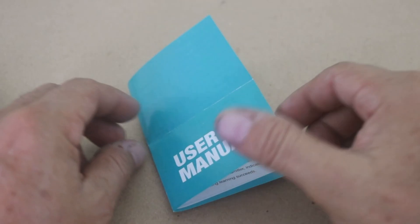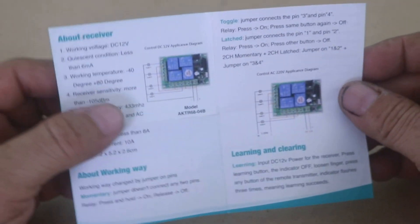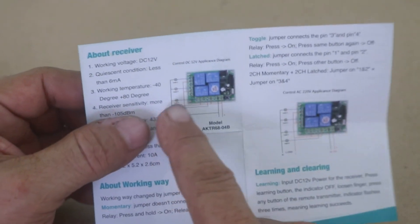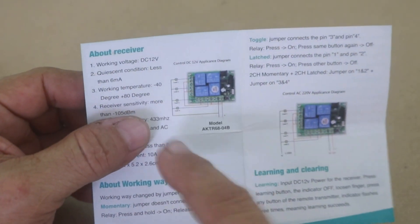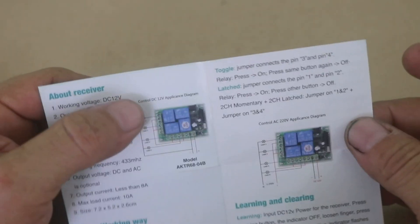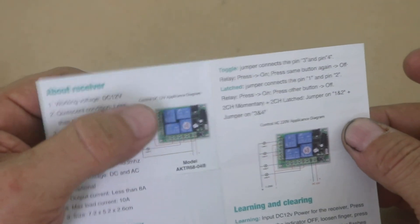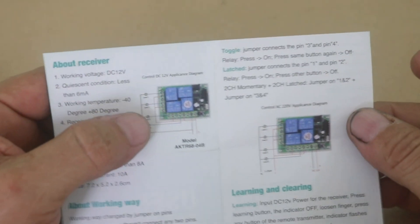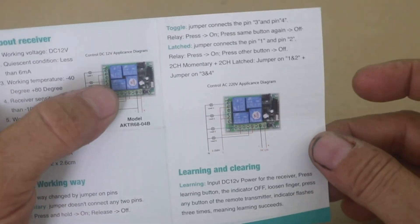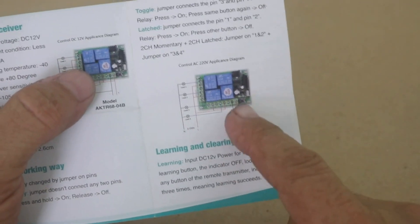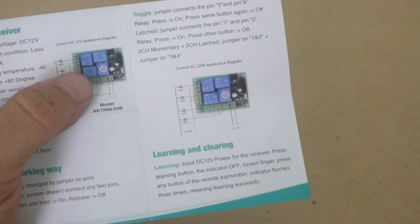It comes with a little user manual and it is very simple. Here are the points where you can connect. It identifies the normally open and normally closed contacts of each of the four relays, and the input voltage which is 12 volts.